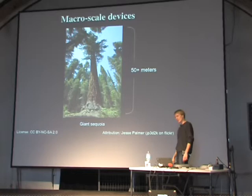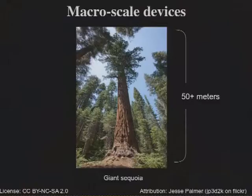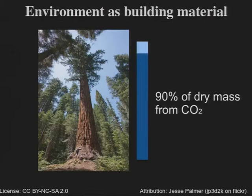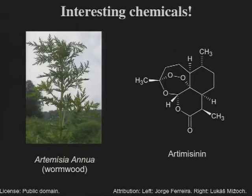We can use biology to build macroscale devices — we see this in nature. We're not quite there yet with the technology, but we know the capability is there. Biology lets you use the environment itself as the building material. This tree: 90 percent of its dry mass is from CO2 — carbon and oxygen from CO2 — so you can build quite large devices from just the gases surrounding you. We can also produce some interesting chemicals; for example, wormwood contains artemisinin, which is an anti-malarial drug.